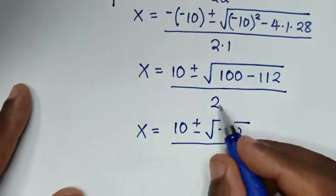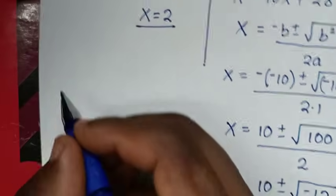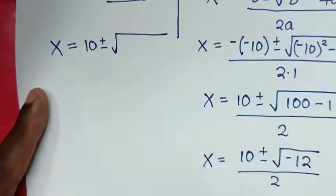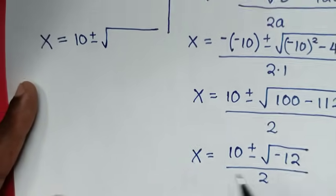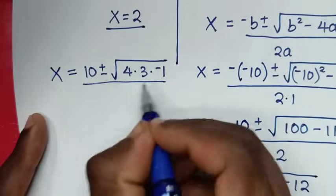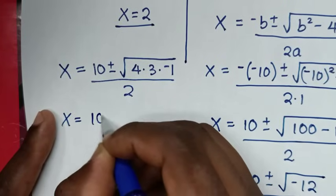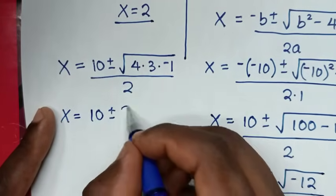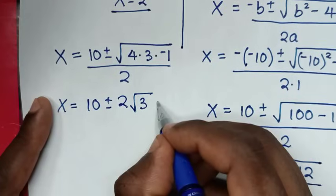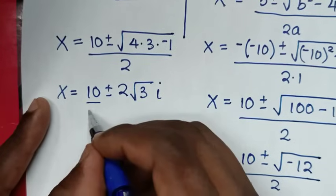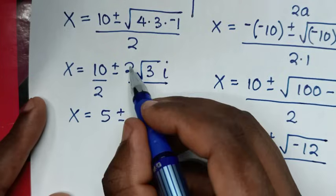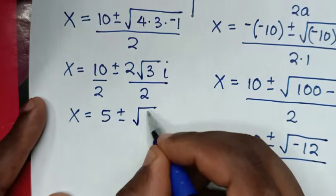Now √(-12): -12 = 4 × 3 × (-1), so √(-12) = √4 · √3 · √(-1) = 2√3 · i. Dividing by 2: 10/2 = 5, and 2/2 cancels, giving x = 5 ± √3 · i.